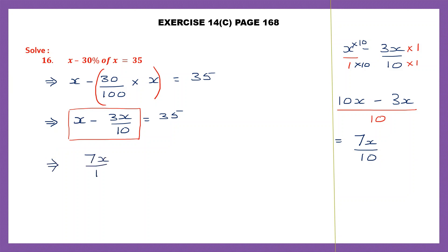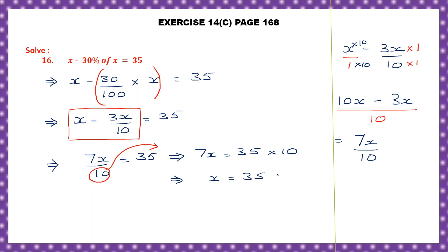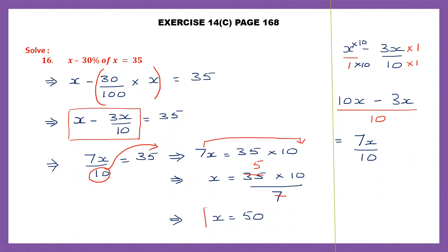7x by 10 is equal to 35. That means 7x will be 35 into 10, because we've transposed the 10 from the denominator to the right — division becomes multiplication. So x equals 35 into 10 divided by 7. We can cancel 7 and 35, since 7 fives are 35. So x is 5 into 10, which is 50.